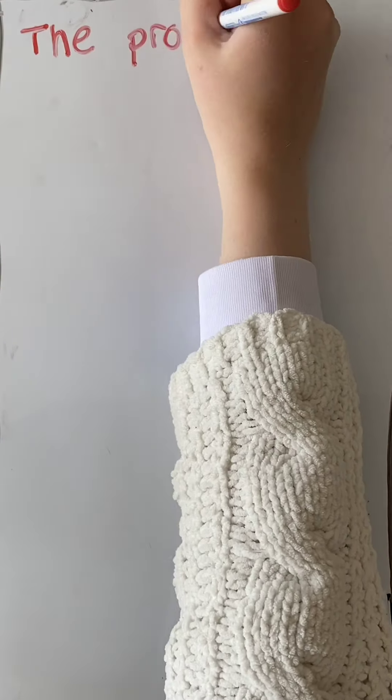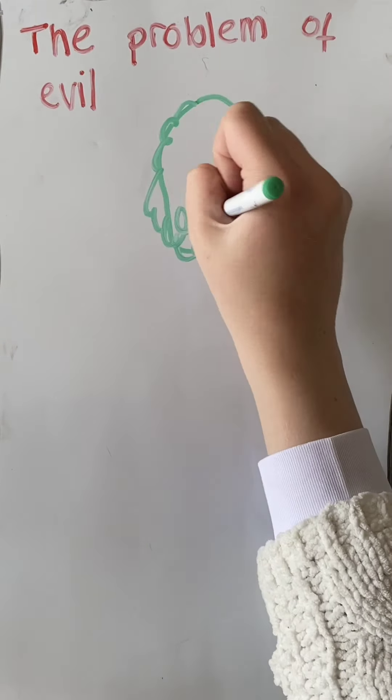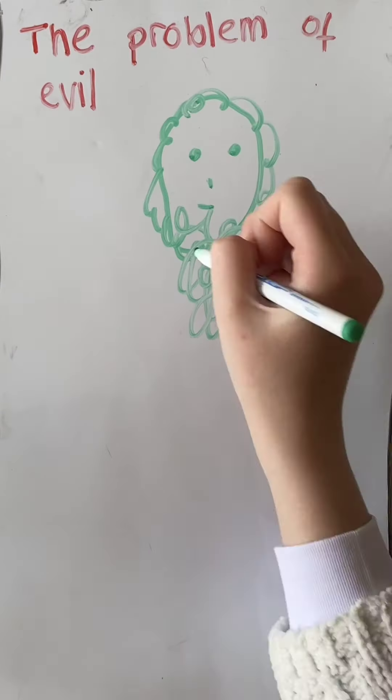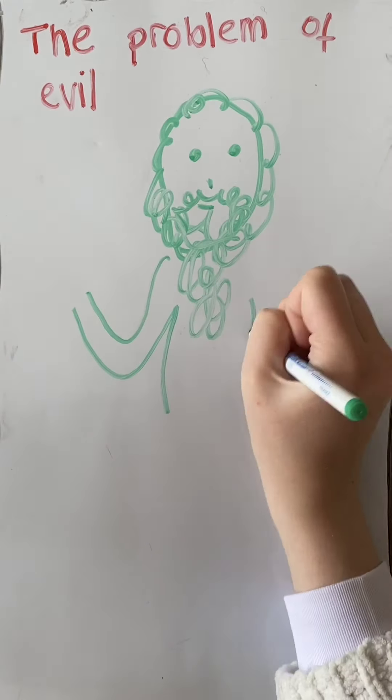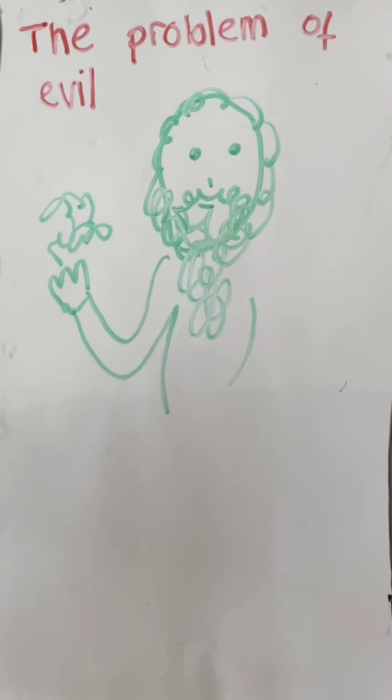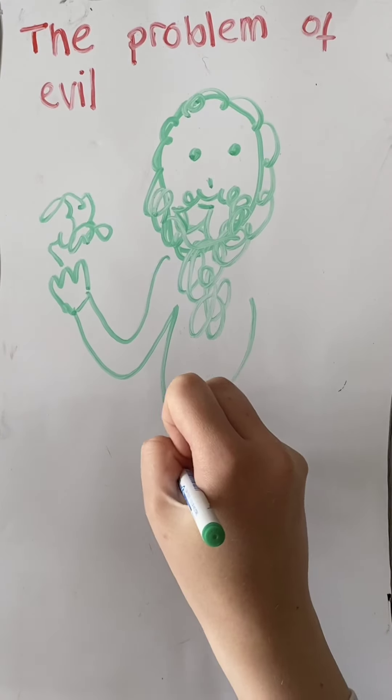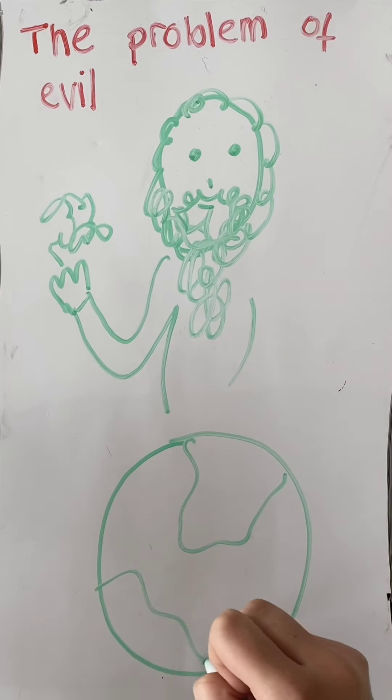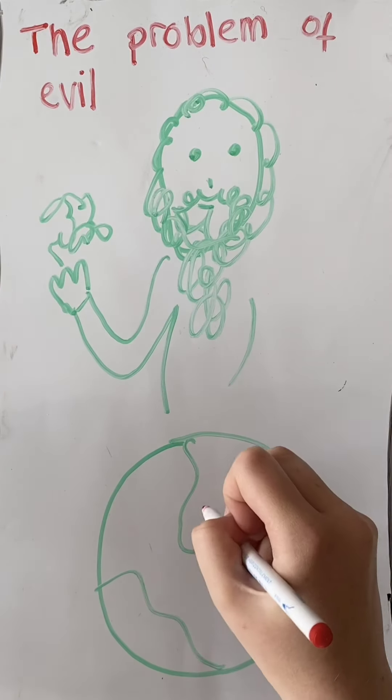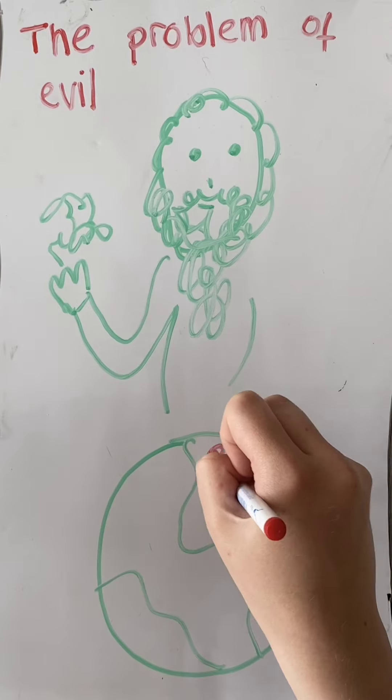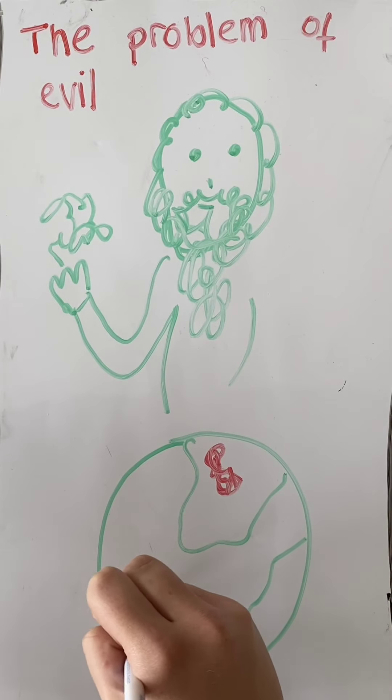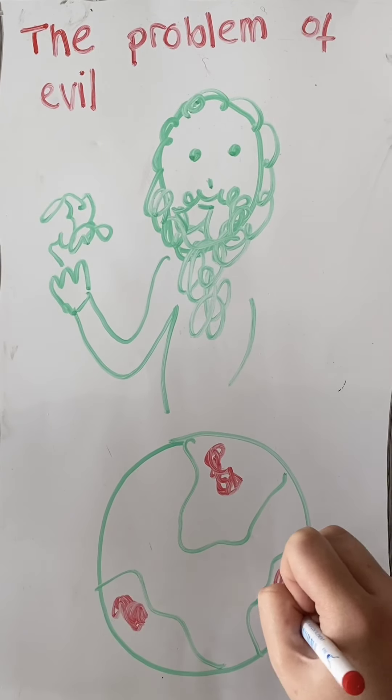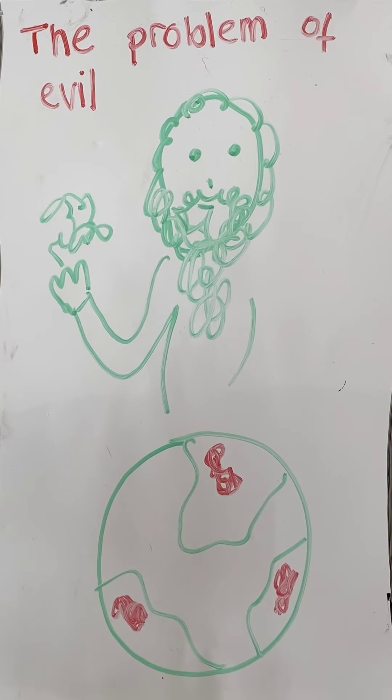The problem of evil consists of two beliefs. One belief is the belief that God possesses certain attributes like power, intelligence, and goodness. The second belief is that the world contains certain properties like pain, suffering, death, and evil. If these beliefs cannot be reconciled, either the belief that God possesses certain attributes or the belief that the world contains certain properties like evil must be abandoned.